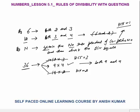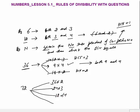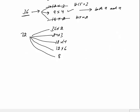So for a composite number, you have to break the number into a product of 2 or 3 co-prime numbers and check the divisibility by all. For example, 72 would be 36×2, 24×3, 4×18, 12×6, or 8×9.